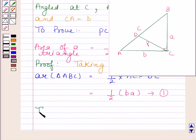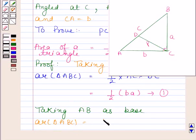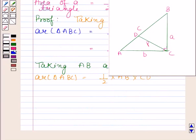Now taking AB as base, we get area of triangle ABC as half into base, that is AB, into altitude, that is CP. Now AB is equal to C and CP is equal to P, so this is equal to half into CP. Let us name this as equation number 2.